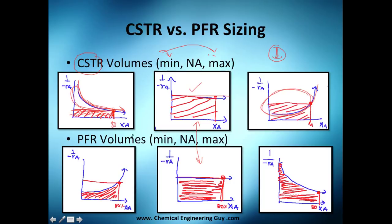Now let's go to PFR. I also order it from minimum volume to maximum volume. Look how the types of rate of reaction invert. This time we are not using a rectangular block — that area is empty. We are using only the area under the curve, which is great. So if you have this type of reaction, please choose a PFR.